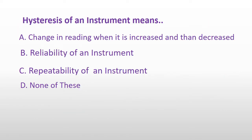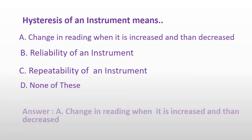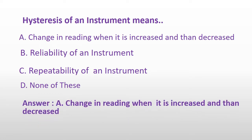Stasis of an instrument means: Option A: Change in reading when it is increased and then decreased. Option B: Reliability of an instrument. Option C: Repeatability of instrument. Or Option D: None of these. And the answer is Option A: Change in reading when it is increased and then decreased.